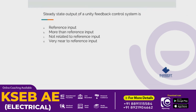The steady state output of a unit feedback control system is very near to the reference input. If we have a reference input, we can compare it — that is the steady state output. It is very near to the reference input.